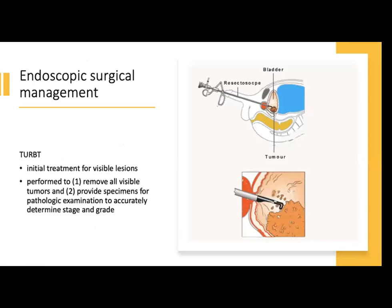TURBT is the initial treatment for visible lesions — performed to remove all visible tumors and provide specimens for pathologic examination to accurately determine stage and grade. While the patient is under anesthesia, you can do a bimanual examination under anesthesia before preparation and draping unless the lesion is clearly small and non-invasive. It is repeated after resection. If fixed or persistent palpable mass after resection, this suggests locally advanced stage.